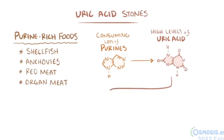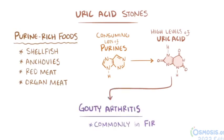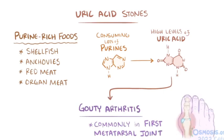High levels of uric acid can also cause gouty arthritis, most commonly in the first metatarsal joint which is the base of the big toe.